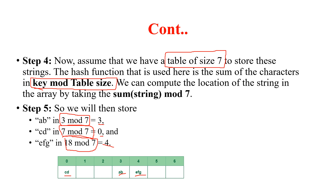So look at how hashing is working — whether you provide a numeric value or a string value, you can calculate the index and store the value at that particular index. It's completely based on the key-value pair. And why do we use key-value pairs? Because the key is always unique, so you can easily search the element, and because of that reason the time complexity is O(1).